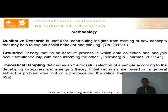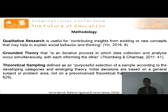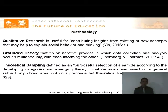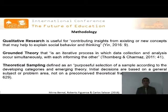Grounded theory also requires systematic comparisons to construct concepts. This is achieved by theoretical sampling, defined as a purposeful selection of a sample according to the developing categories and emerging theory. Initial decisions are based on a general subject or problem area, not on a preconceived theoretical framework.